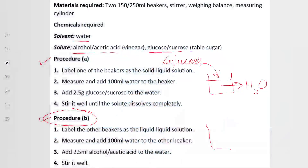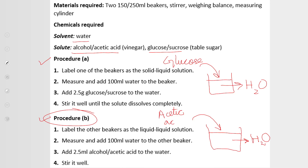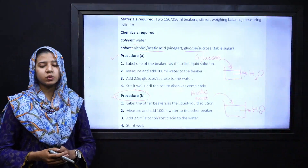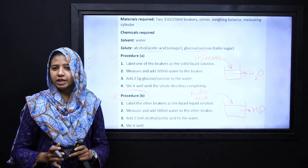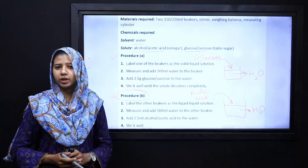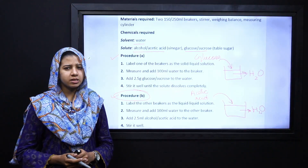For Procedure 2, again take a beaker and add 100 ml of water. Add the solute — you can add acetic acid or alcohol. If we have taken acetic acid as a solute, these two solutions will be prepared. In these solutions we will answer some questions.